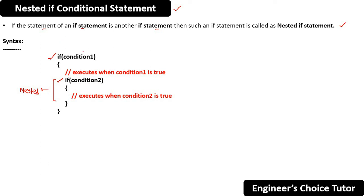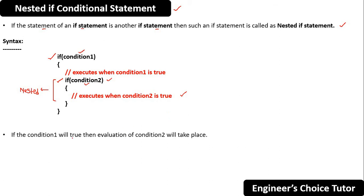So basically, if condition one is true, then only control will come to this nested if. And if condition two is also true, then whatever statements are present inside the nested if will execute. So if condition one is true, then evaluation of condition two will take place.